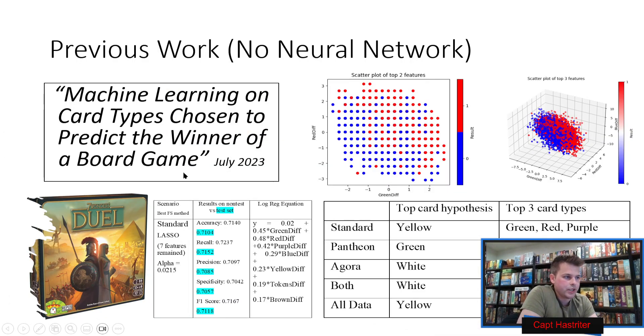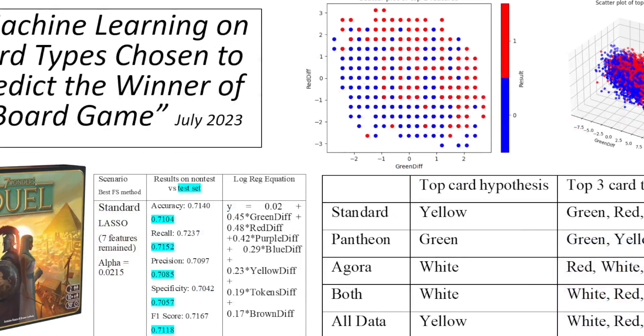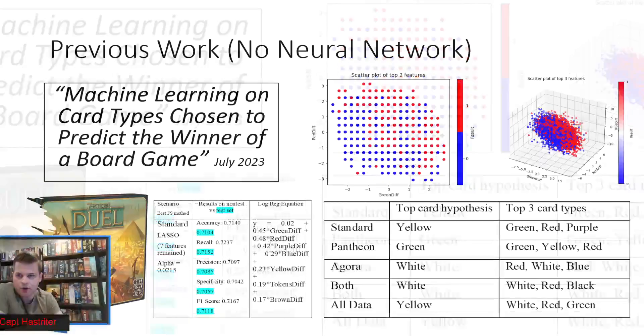In July 2023, we looked at the end of the game and the cards that were chosen. You can see that green and red cards had a high prediction in who was going to win with a 71% accuracy for that classification problem.